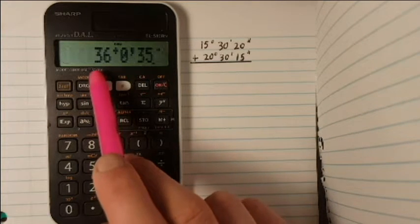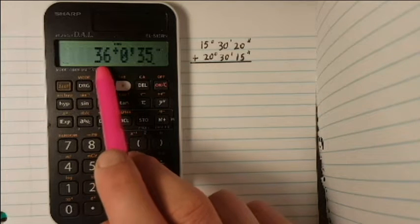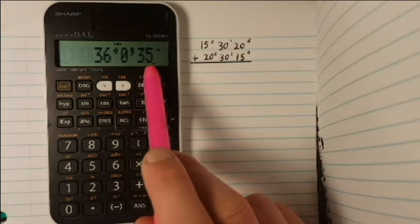You can see that the result is in degrees, minutes, and seconds. The result of our calculation is 36 degrees, 0 minutes, 35 seconds.